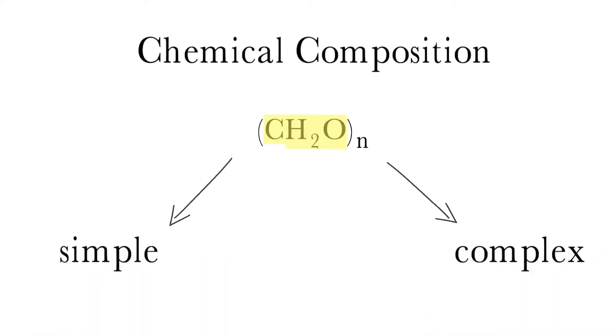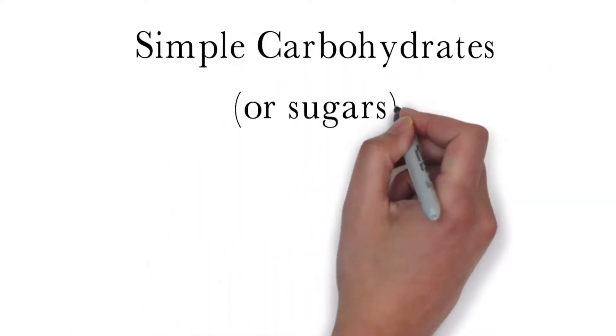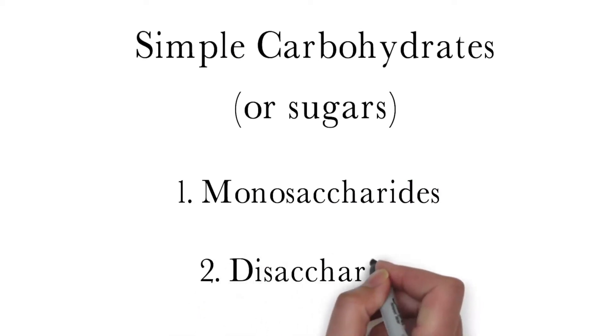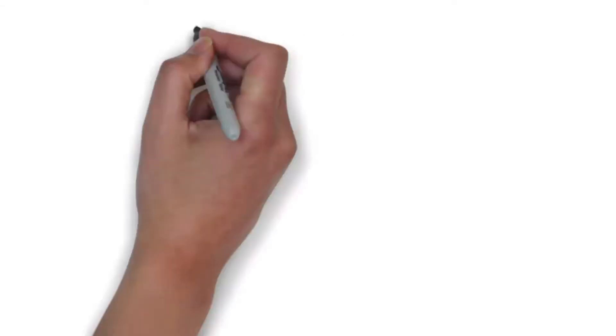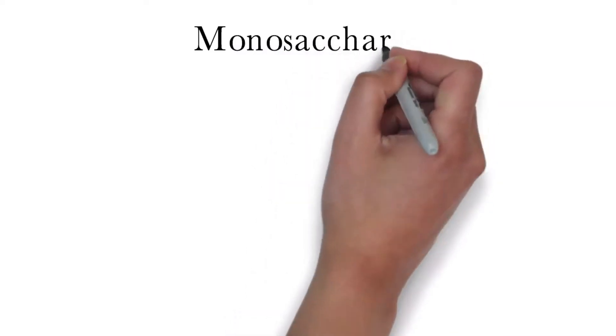All carbohydrates can be classified as either simple or complex. Simple carbohydrates are often just referred to as sugars. There are two types, monosaccharides and disaccharides. Monosaccharides are the simplest form of sugar and the most basic unit of carbohydrates. There are three important monosaccharides in nutrition.